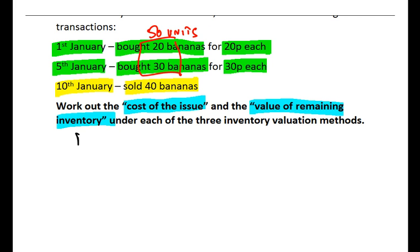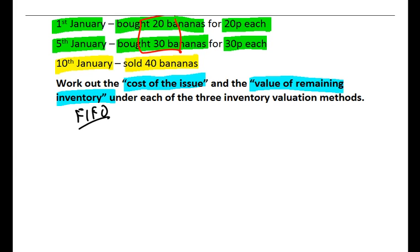To start with, let's think about it under FIFO. FIFO is the assumption that the first in is the first out — we sell the oldest units first. With something like bananas, which are a perishable foodstuff that go off and go mushy, we'd want to sell the older bananas first before they go off. There are different ways to work through the numbers, and I'm going to show you a fairly useful approach.